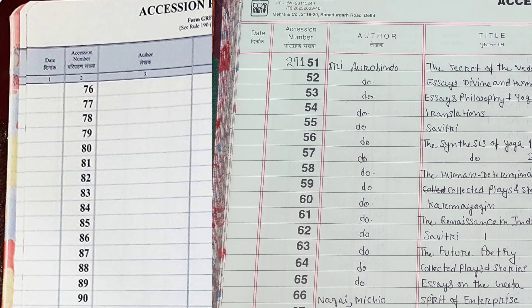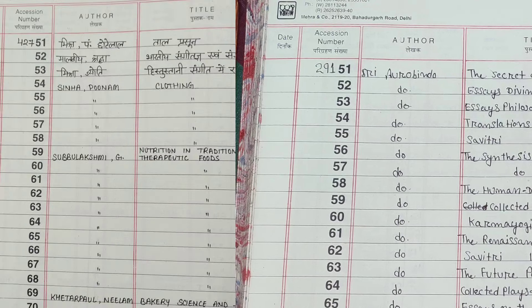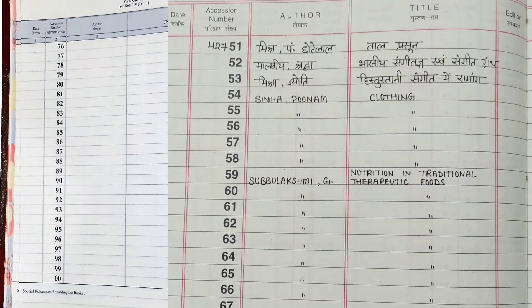Suppose there are a thousand books in a particular bill you have received. First, do the sorting work — there might be books with the same title but different quantities, for example one title with 10 copies and another with 20. What you have to do is enter all those 10 or 20 books at the same place: write once and then make a mark as shown in the register, so you do not have to repeat entries again and again. Sorting is done for this purpose.